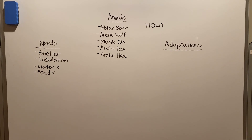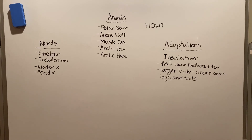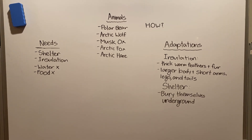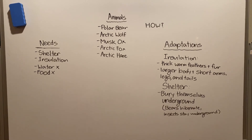The two main needs are shelter and insulation in this area. For insulation, animals usually have thick, warm feathers and fur that cover their body. They also have larger bodies and shorter arms, legs, and tails. All of these traits help animals conserve their heat. Finally, for shelter, usually they just bury themselves underground. For example, polar bears, when they hibernate, burrow parts of their body underground, while insects stay in the depths, allowing them to have good shelter.